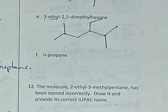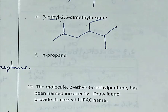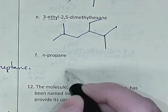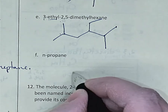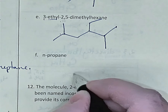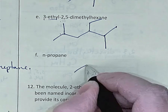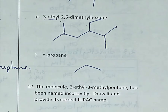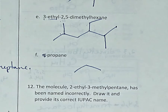n-propane means normal propane, which is just the unbranched propane — a three-carbon hydrocarbon: 1, 2, 3. You could also just call it propane if you prefer.